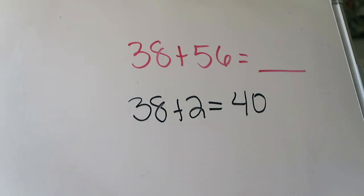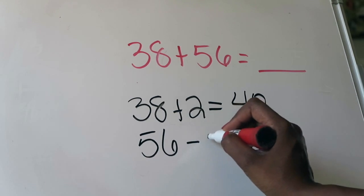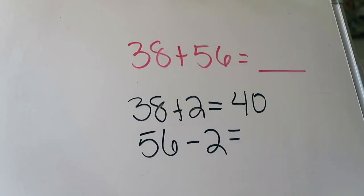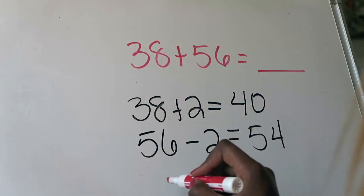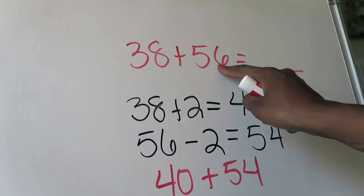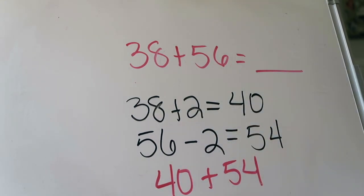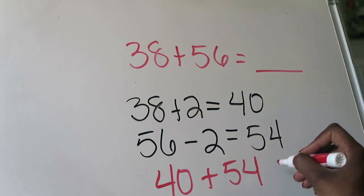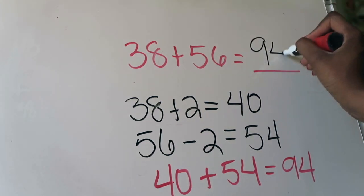So I take 56 minus two, which gives me 54. Now instead of adding 38 plus 56, I am now adding 40 — a nice even number — plus 54. It's 54 because I took two from the 56 when I wanted to change my 38 to a 40. That's nice and easy to add mentally because 40 plus 54 gives me an answer of 94. So with this strategy of using friendly numbers, I know that 38 plus 56 is going to equal 94.